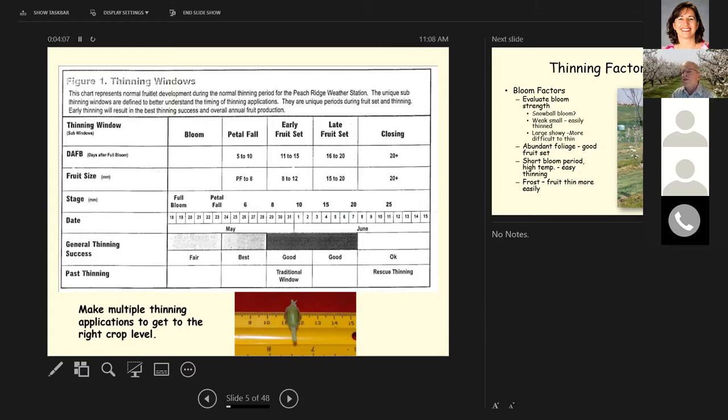These are broken down into days after full bloom based on fruit size. Here we have the stages and a rough date. The general thinning success. Usually bloom, we've got fair success with thinners. That may have changed just recently. Petal fall is generally our best time. Typically we thin at the early fruit set stage when the fruit are 8 to 12 millimeters in size. This is our traditional window. Then we have late fruit set where thinning is good. And then we get to closing where thinning gets really difficult. You have to use higher rates of thinning and the fruit may come off the tree.